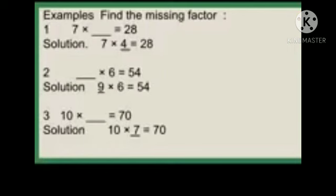We will read the table of 10 until we get the product: 10 ones are 10, 10 twos are 20, 10 threes are 30, 10 fours are 40, 10 fives are 50, 10 sixes are 60, 10 sevens are 70. We got the product 70! How many times did you read the table of 10? Yes, 7 times. So we write 7 here and the missing factor is 7. In this way we find the missing factor.